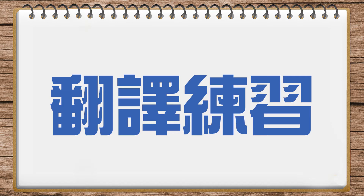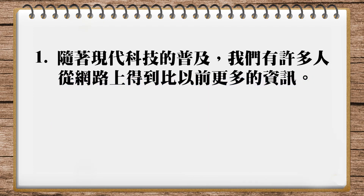Here is sentence one. 好，那我們來看看這個總共三句，我們來看看怎麼翻。第一個句子，它說，隨著現代科技的普及，我們有許多人從網路上得到比以前更多的資訊。那在這裡呢，其實就是一個翻譯很常常見到現象，就是很多時候你在翻譯的時候，你可能要先弄清楚它中文的意思到底是什麼。Yeah, that's really important.